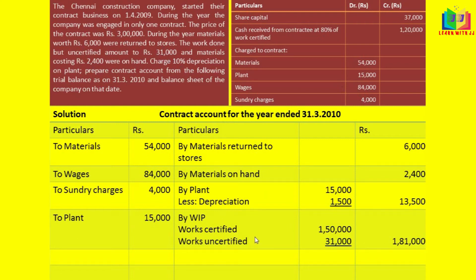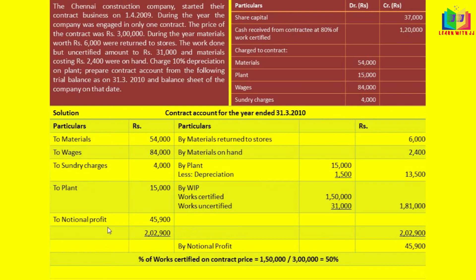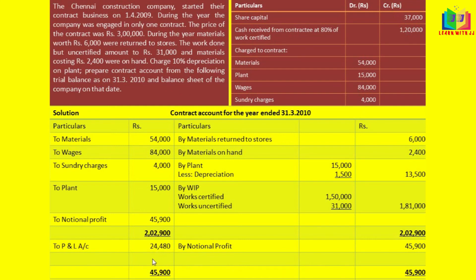We finished writing everything, so we can now balance it and find the notional profit. The notional profit is 45,900. Now we have to transfer this notional profit to P&L and reserve. First, we find the percentage of work certified on contract price — contract price is 3 lakh and work certified is 1,50,000, so we get 50%. This is the third criteria, so two-thirds of the notional profit is to be transferred to P&L. P&L equals notional profit into 2/3 into cash received divided by work certified — cash received is 1,20,000. The balance is reserve: 21,420. We finished this contract account.